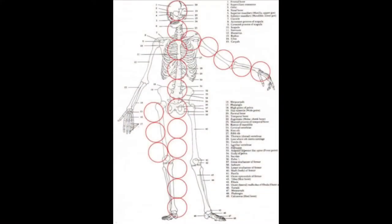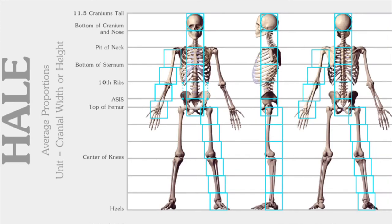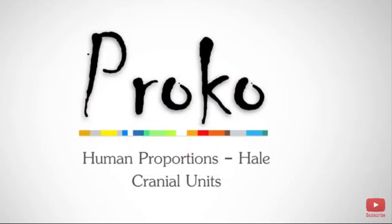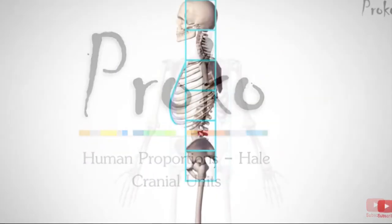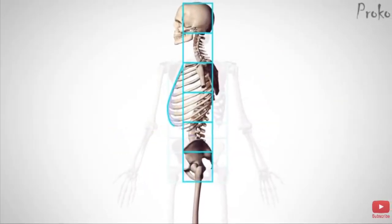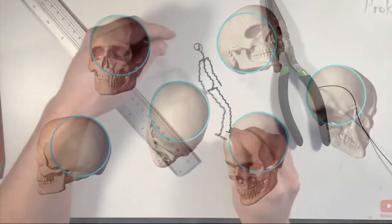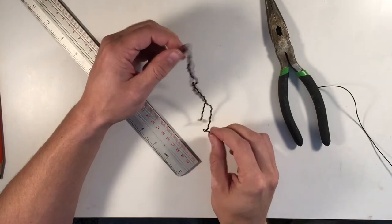I use the Robert Beverly Hale cranial unit measuring system for all of my armatures. This system works great because it lines up with bony landmarks. For more information on this system, check out the Proko video titled Human Figure Proportions Cranial Units Robert Beverly Hale. This will be a small armature so one unit will equal one centimeter.